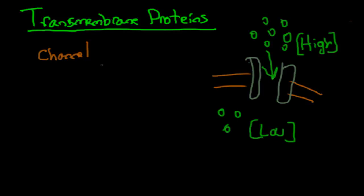Now why would solutes use the channel proteins? Well, because these solutes are generally hydrophilic, meaning they're not able to pass straight through the plasma membrane. Why? Because the plasma membrane has a hydrophobic center. So the purpose of channel proteins is to provide a hydrophilic pathway for these solutes to go through. Solutes that are hydrophilic are generally going to be using channel proteins to get in and out of the cell.